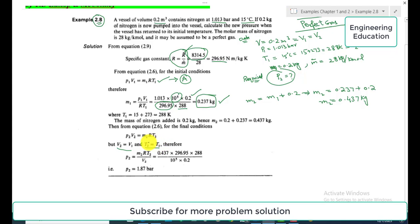We will use the same values as used for state 1. Rearranging this equation: P₂ = M₂RT₂/V₂. M₂ is 0.437, R is 296.95, T₂ is 288.